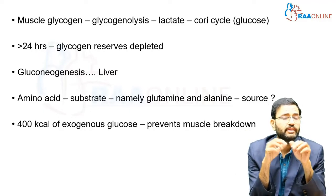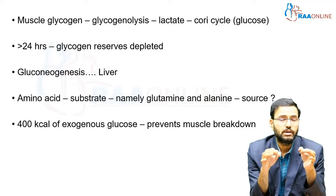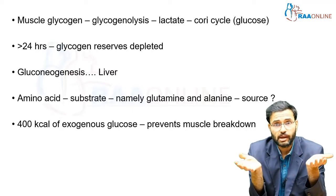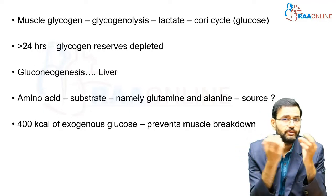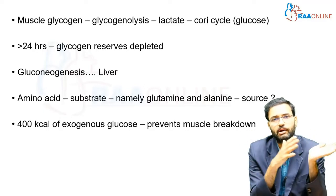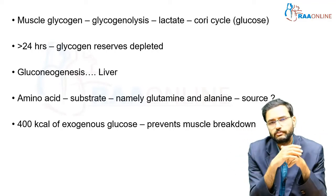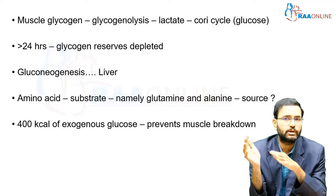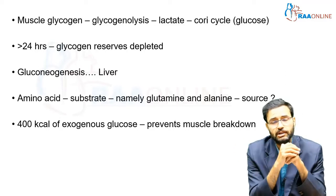An important point about the Cori cycle is that it is an energy-dependent process. ATP is required for the Cori cycle to occur — it does not give energy but in turn consumes energy to produce glucose. This is how muscle glycogen differs from liver glycogen. In the liver, glycogen breaks down and forms glucose directly, whereas in skeletal muscle, glycogen must be broken down, transported to the liver, and converted there.